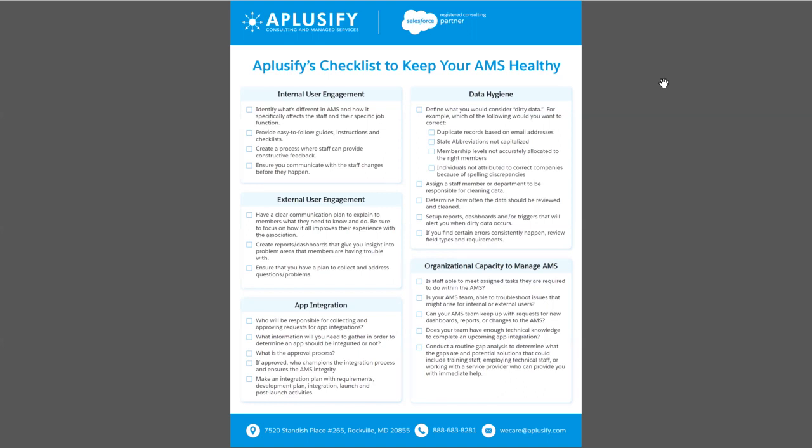When you actually start using an AMS, there are two types of users that come across. One is your internal staff — the internal users — and one are your actual members or fundraisers who are the external users, who are going to use it to pull different reports and dashboards.